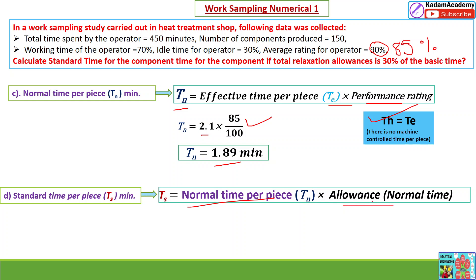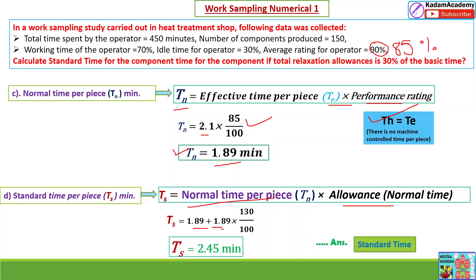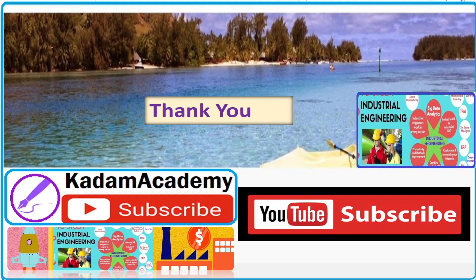The standard time T_s is calculated using the formula: normal time multiplied by the allowance factor. The relaxation allowance given is 30%, so the allowance factor is 130/100 = 1.30. Therefore T_s = 1.89 × 1.30 = 2.45 minutes. This is the standard time required for the operation. Thank you for watching — if you have not subscribed, please subscribe to my channel.